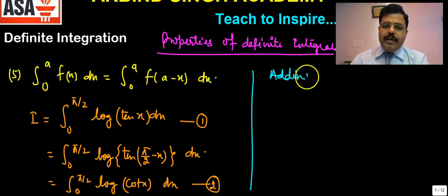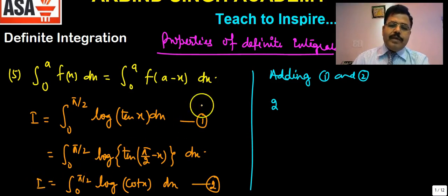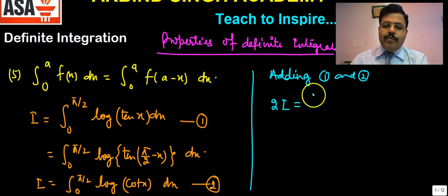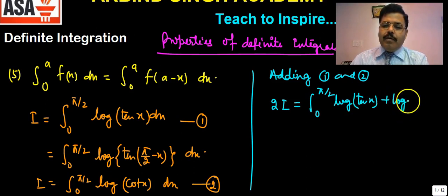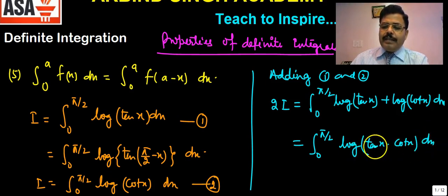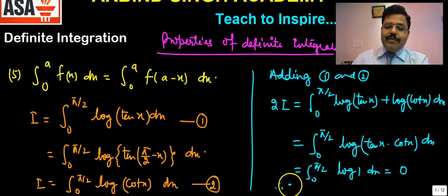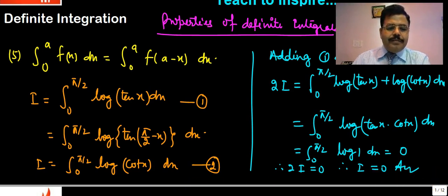Adding the two expressions, we get 2I equals the integral from 0 to π/2 of [log(tan x) + log(cot x)] dx. Using the log property, log m + log n = log(mn), this becomes the integral of log(tan x · cot x). Since tan x · cot x = 1 and log 1 = 0, we have 2I = 0, therefore I = 0. This is the answer.